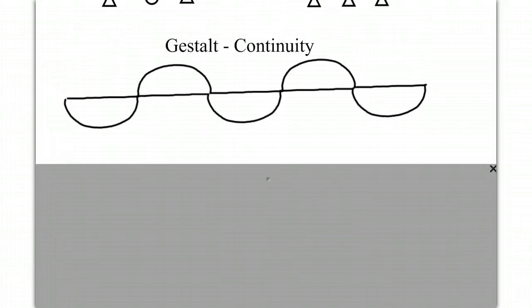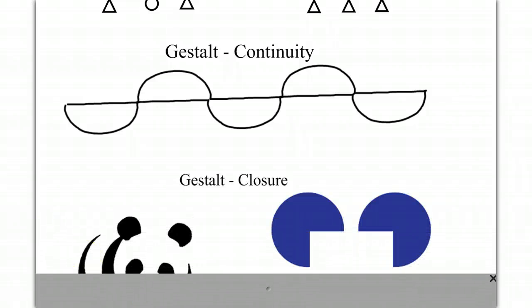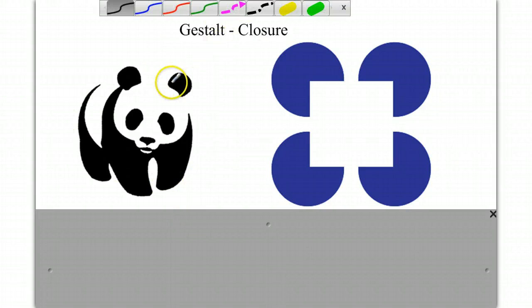Let's move on to the gestalt principle of closure. This is a real interesting one. Here are two examples. When we see this image here, our brain closes the image, meaning even though it's not here, we see this line or we perceive it. Maybe we don't see it, but we perceive it. If I go back and erase it, we don't feel like this is an incomplete image here.